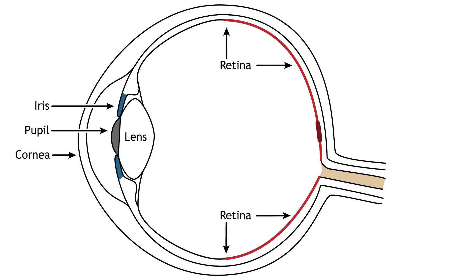The retina is the light-sensitive region in the back of the eye where the photoreceptors — the specialized cells that respond to light — are located. The retina covers the entire back portion of the eye, so it's shaped like a bowl. In the middle of the bowl is the fovea, a region of the highest visual acuity, meaning the area that can form the sharpest images.